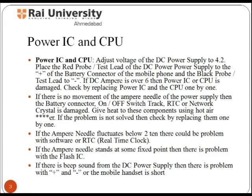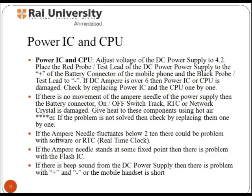If the amp needle fluctuates below 2, then there could be a problem with software or RTC (real time clock). If the amp needle stands at a fixed point, then there is a problem with the flash IC. If there is a beep sound from the DC power supply, then the positive and negative on the mobile handset are short.